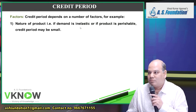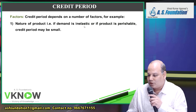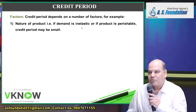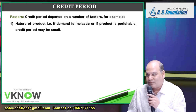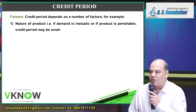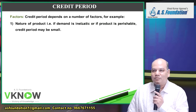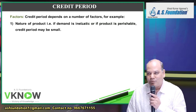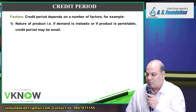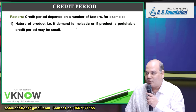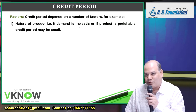If demand will not change irrespective of the price, the seller is not interested in giving credit. A seller gives credit only if you purchase more. If you are not going to purchase more even if he gives you credit, it is better not to give credit. This is called an inelastic product — demand is not affected irrespective of price or credit period. Then you should sell it on cash only; don't give credit.